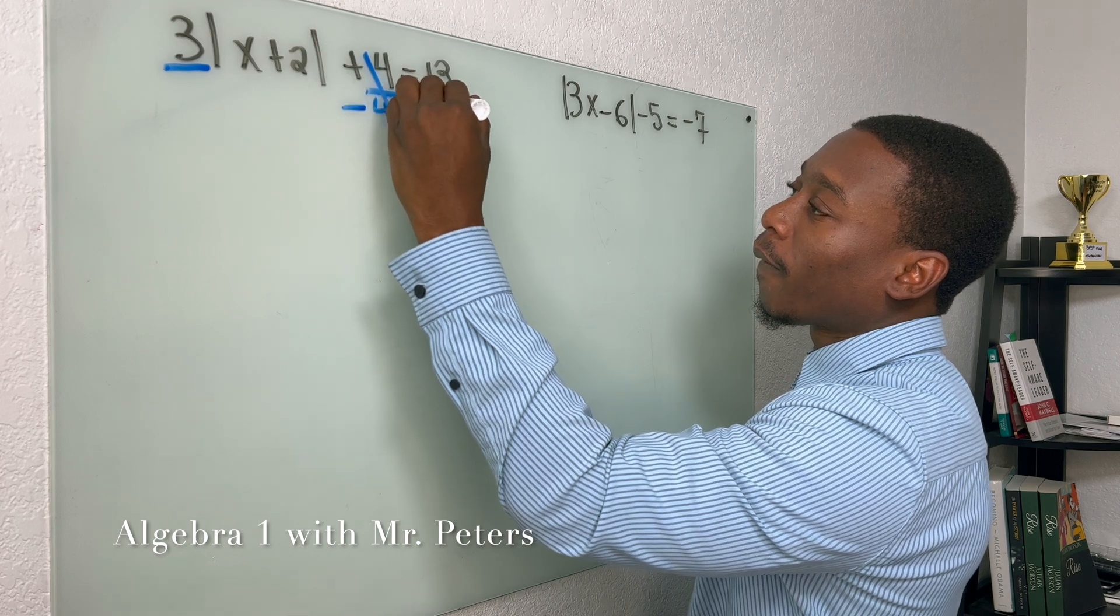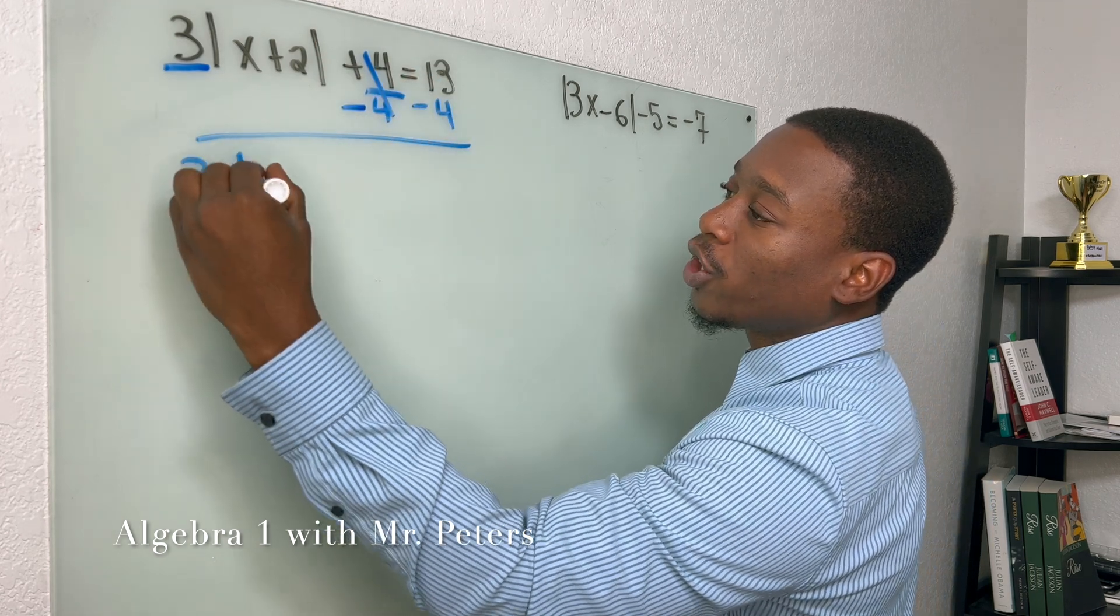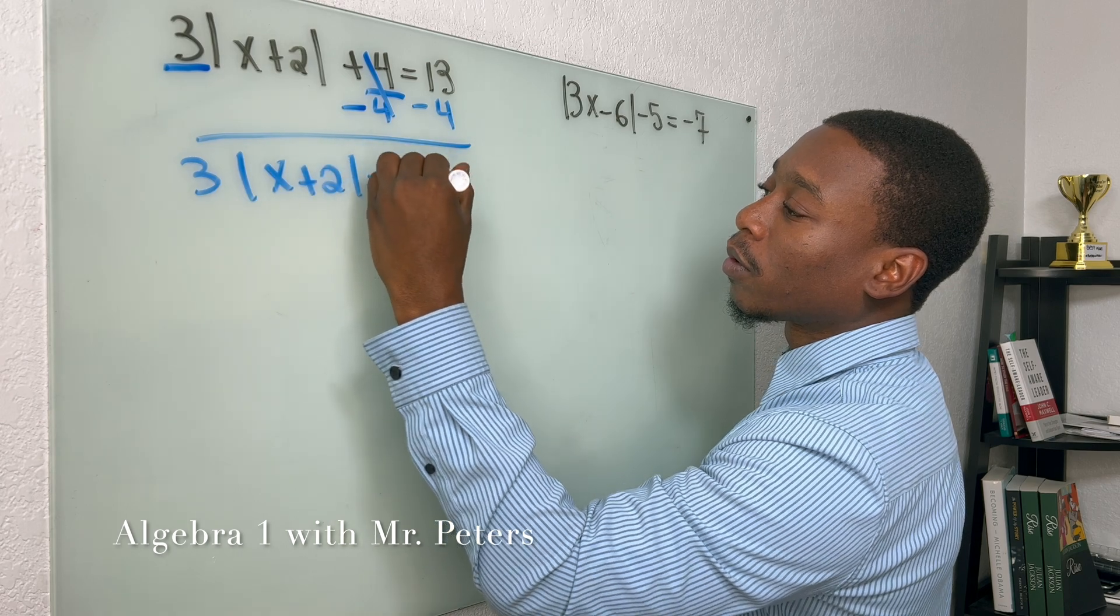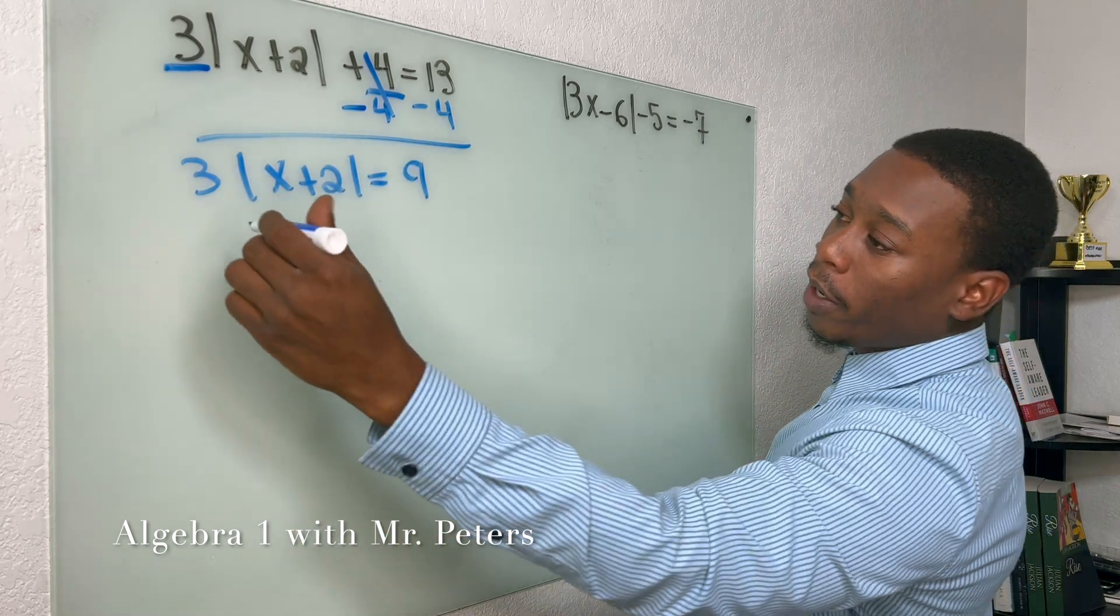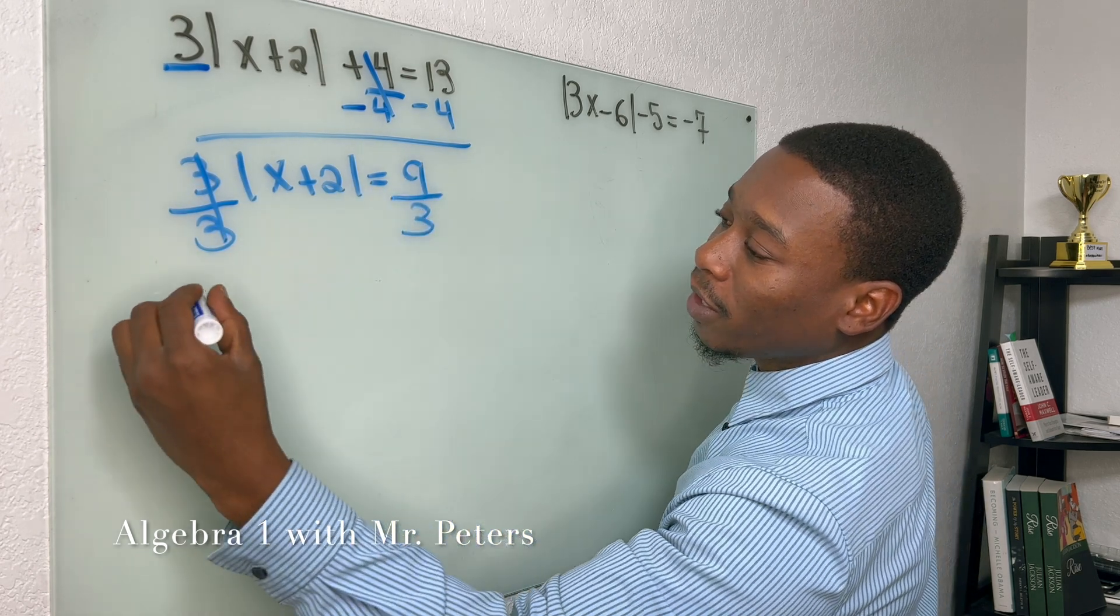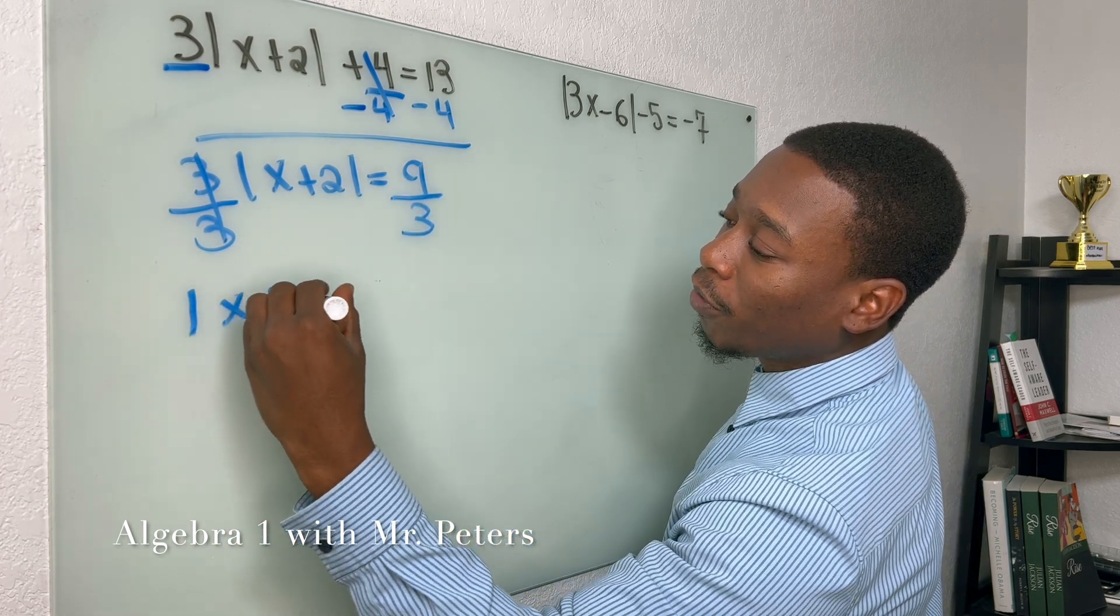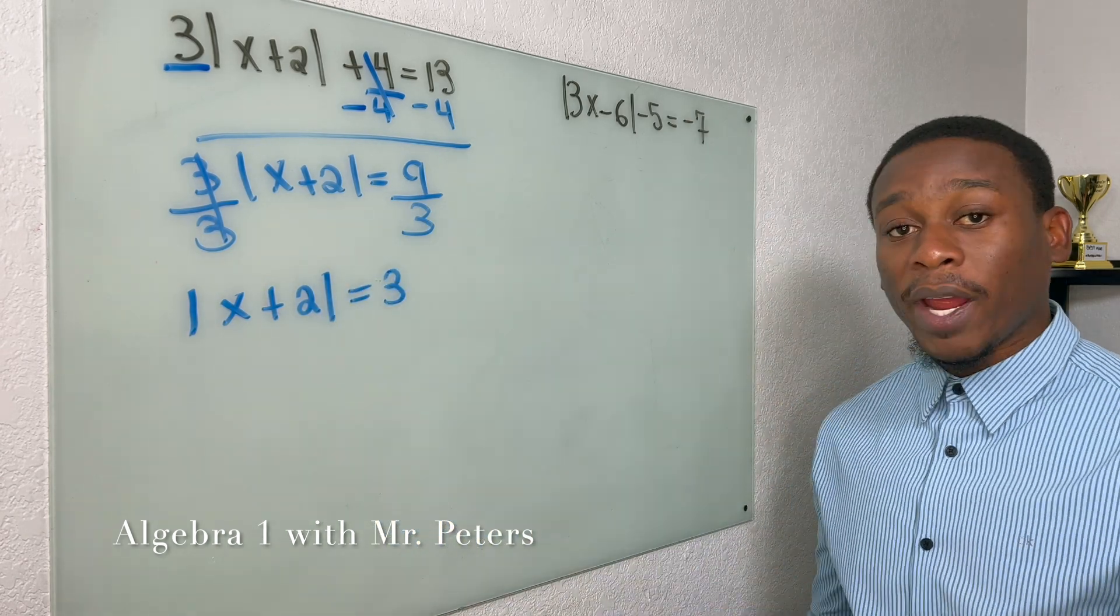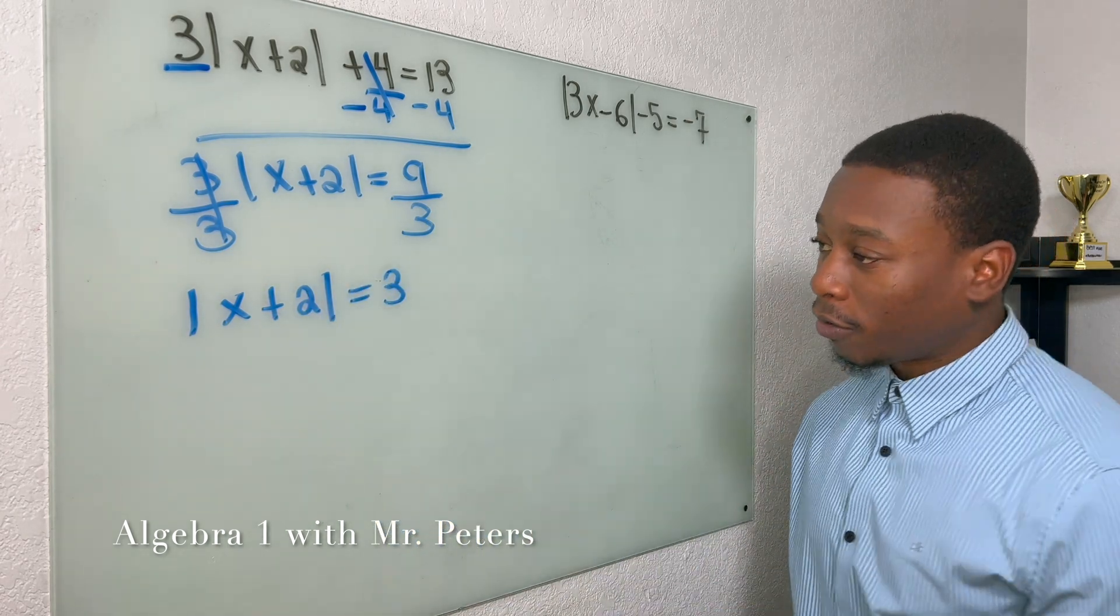So we're going to subtract four. Our new equation is going to look like this. Then we're going to go ahead now and divide by three. At this stage, the absolute value is absolutely by itself, so we can now create the two equations and solve.